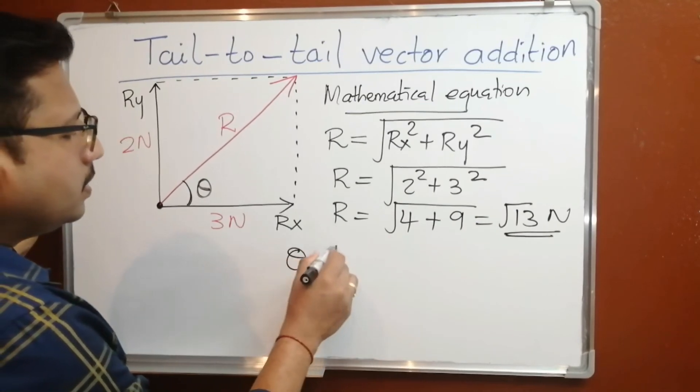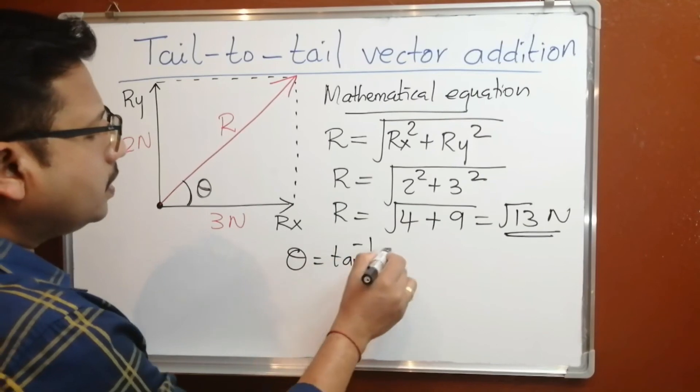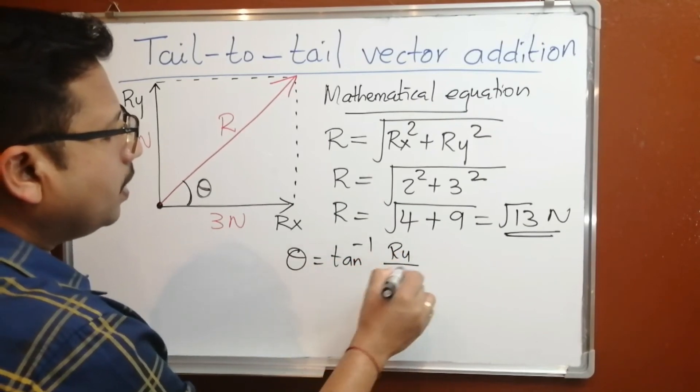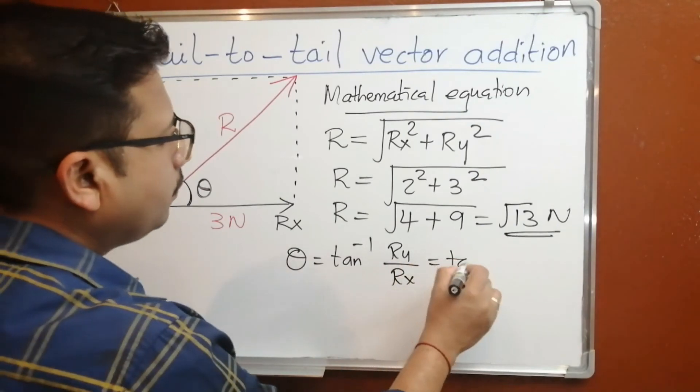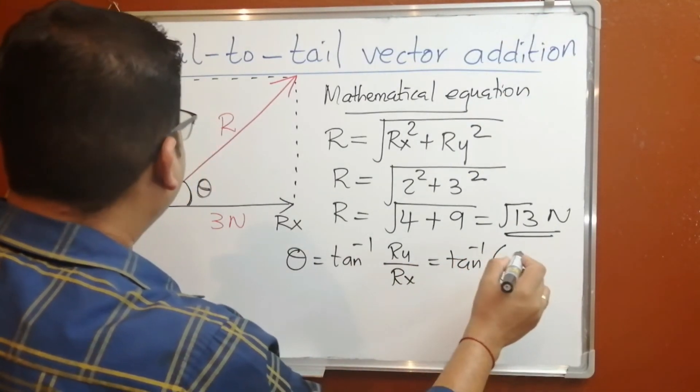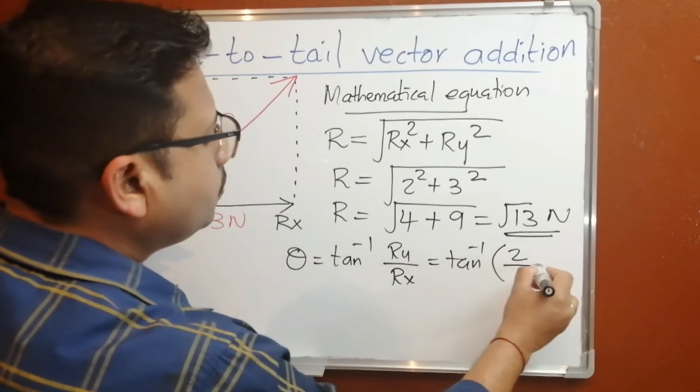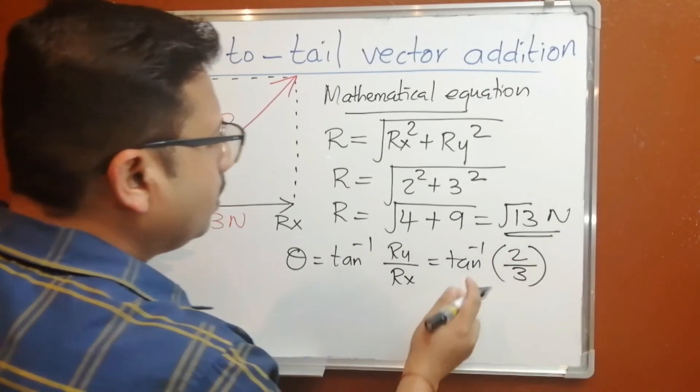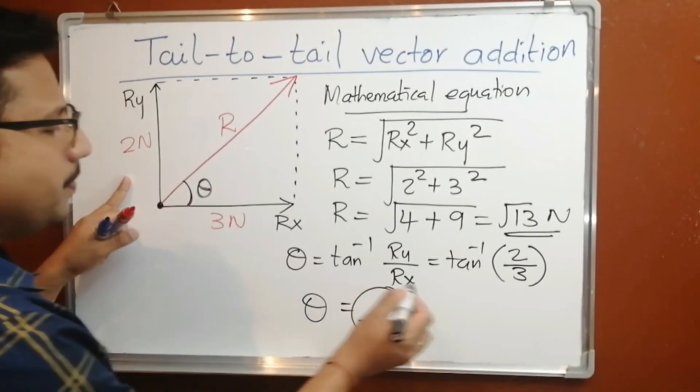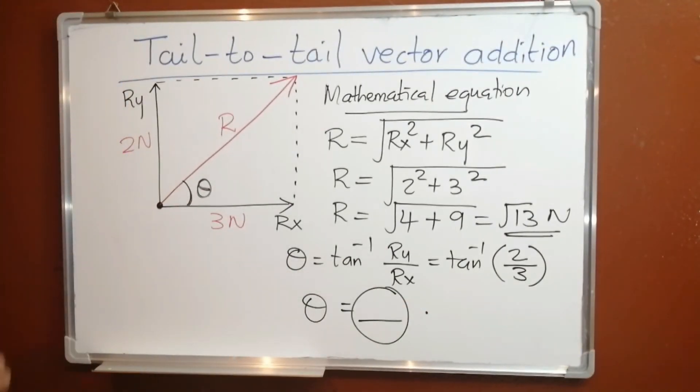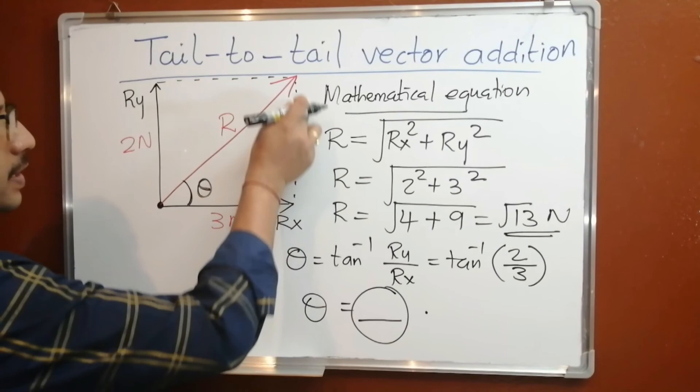Angle theta is tan inverse r-y over r-x. If you substitute, it's tan inverse your r-y is 2, r-x is 3. If you simplify this you will get the value of theta. And theta you measure from the positive x-axis here.